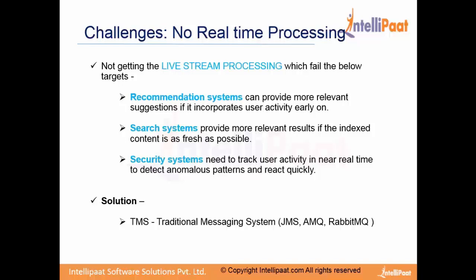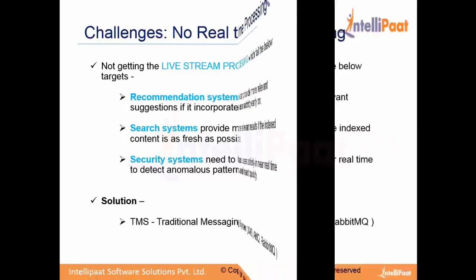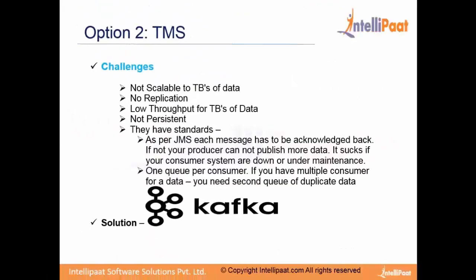As a solution we can think of traditional messaging systems, because they can process data in real time. But what are the problems with traditional messaging systems like JMS, AMQ, and RabbitMQ? The first problem is that they are not scalable to terabytes of data, there is no replication, they process data in memory, and as data grows their throughput continuously goes down.